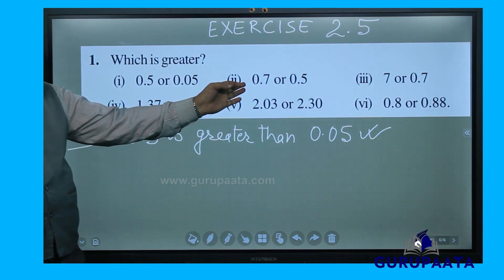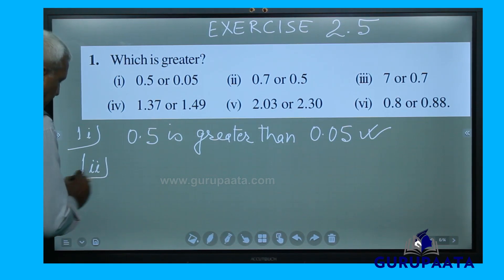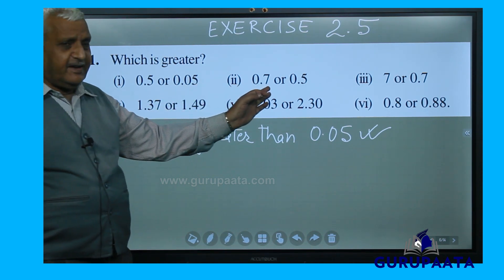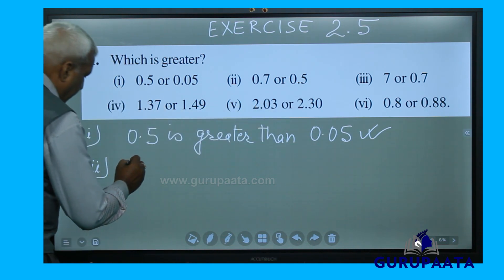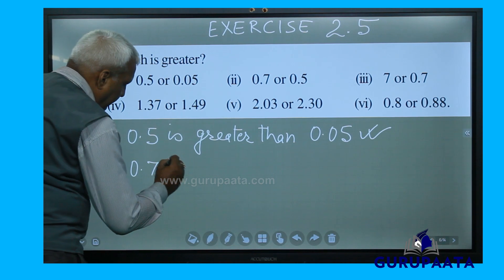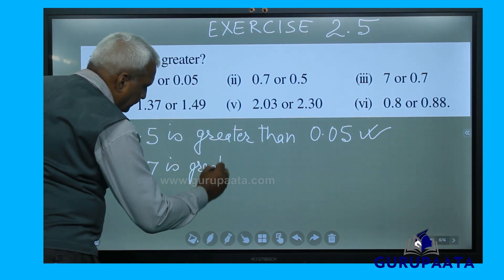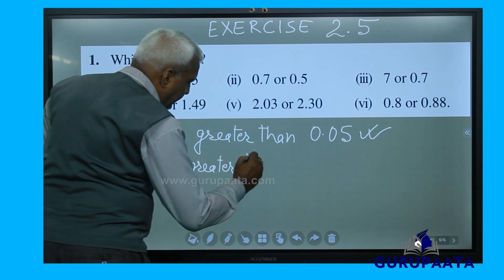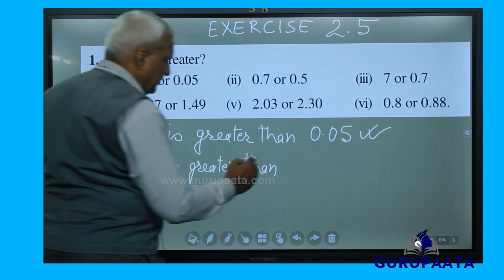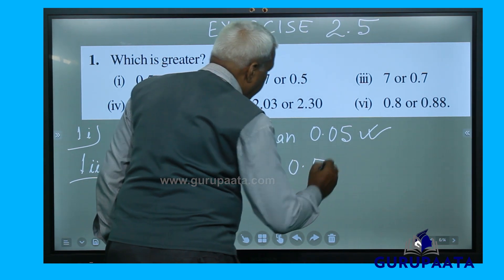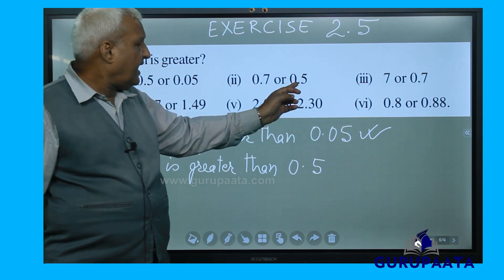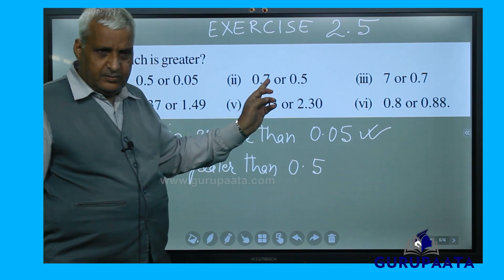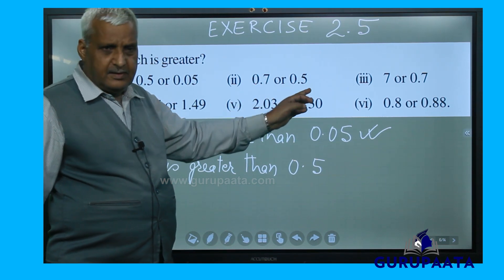For question 2: 0.7 is greater than 0.5. Both digits are at the 10th place, but 7 is more than 5, so the larger value is bigger.